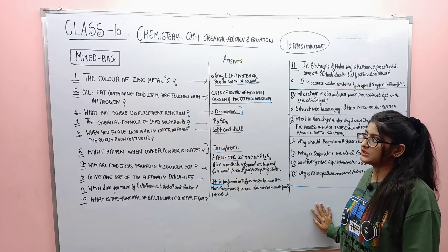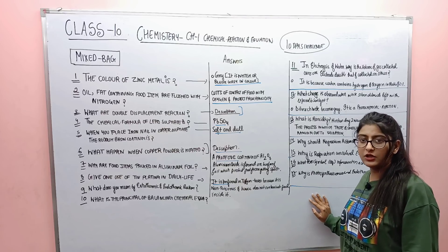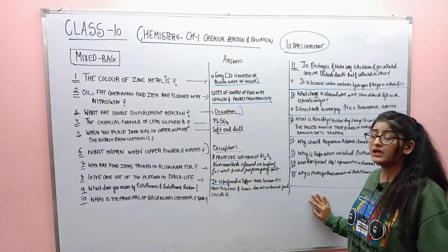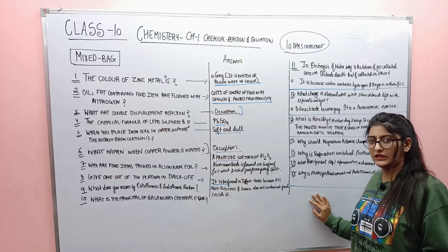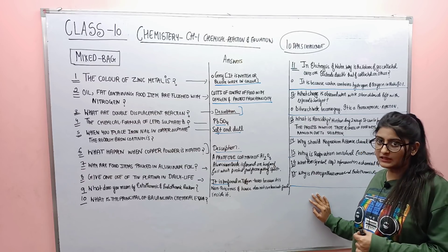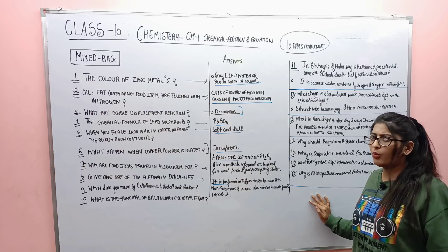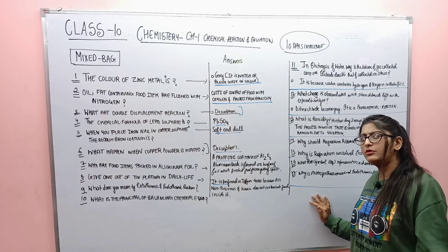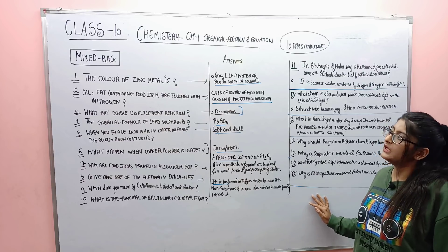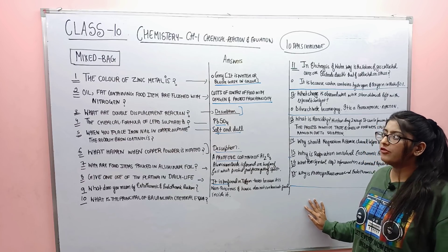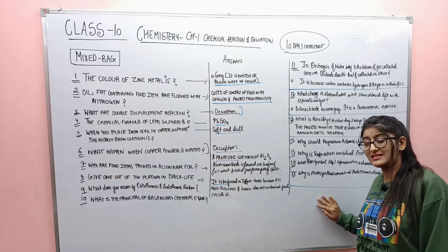The first question: what is the color of zinc metal? Zinc metal is gray — basically whitish or bluish gray in color. You have to learn this answer with all the details. In your exam there will be three options given: gray, white, light blue — so the answer is basically gray.